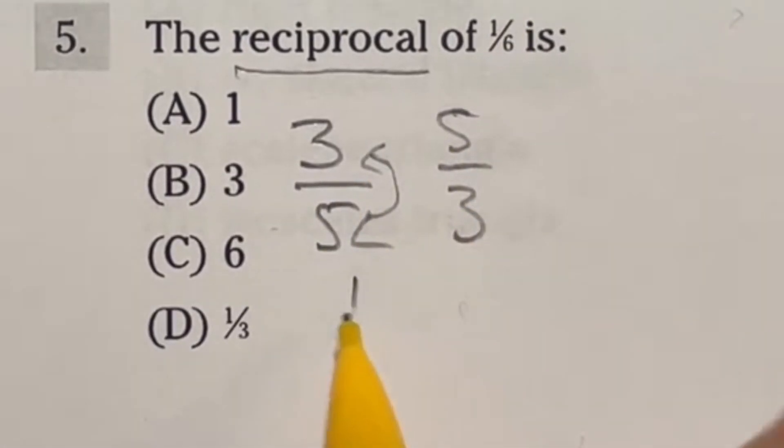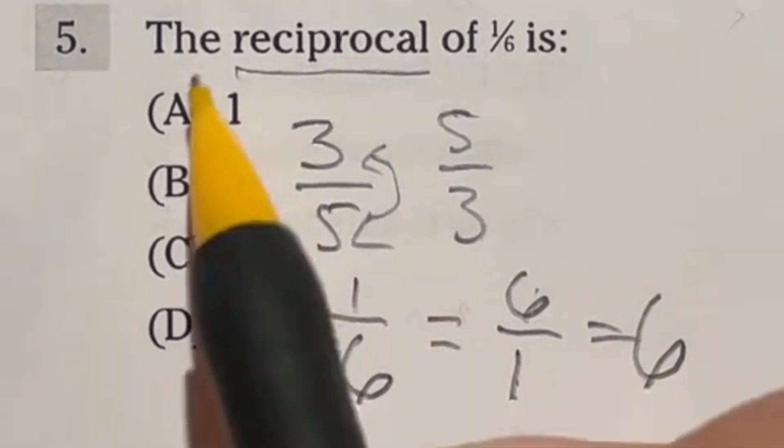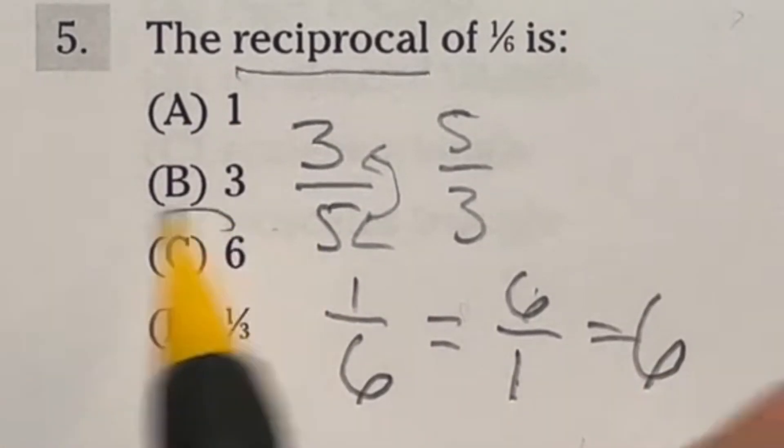So in this case, we're dealing with a one over six. So if I flip that upside down, it's going to become a six over one. Now remember, when anything is divided by one, you just get that number back, which means that this is actually just the number six. So if I look through my answers here, that means we're looking at answer C.